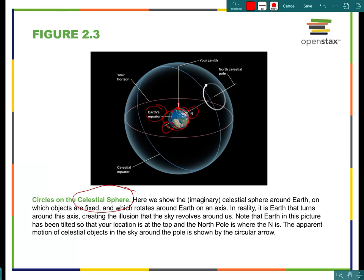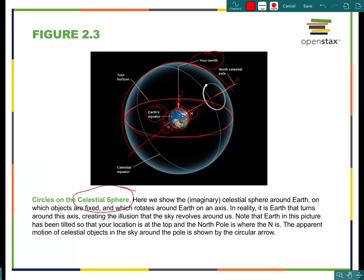Here's a stick figure standing on the surface of Earth. When they look up, directly above them is their zenith, and they're going to be able to see half of the celestial sphere. So it'd be from the horizon point on one side, another horizon point on the other, and zenith directly above.